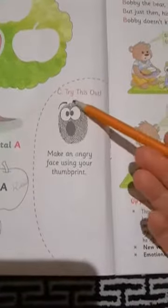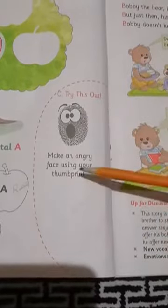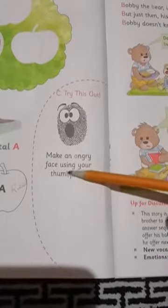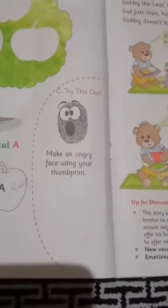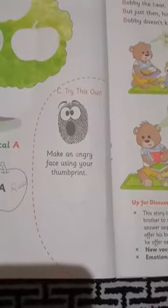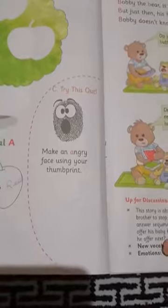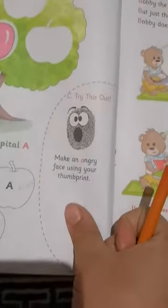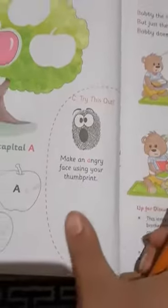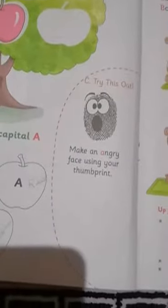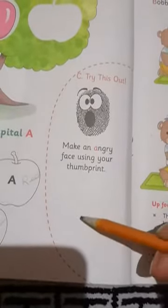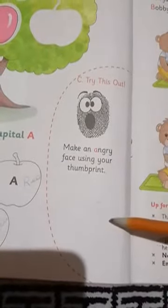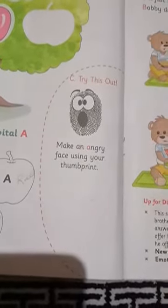Then we have another exercise. Try this out. Aapko kya karna hai? Make an angry face using your thumbprint. Aap apne badon ki help le sakte hai. They'll have a stamp pad. Aap uspe kya karo ge? Aapna thumbprint nikaal ho ge. And you will just apply it here. Yehaan pe apna thumbprint laga ho ge. And you will make an angry face. Aap uski eyes bana ho ge. You'll make eyes for it and mouth for it. That shows that this is, the thumbprint is angry.